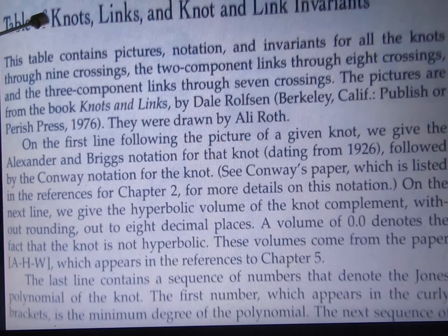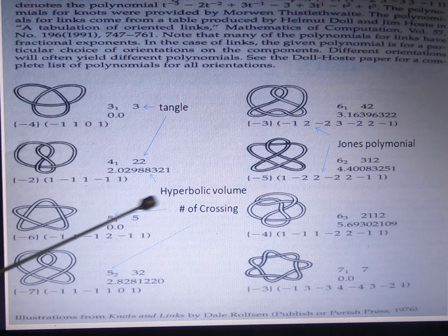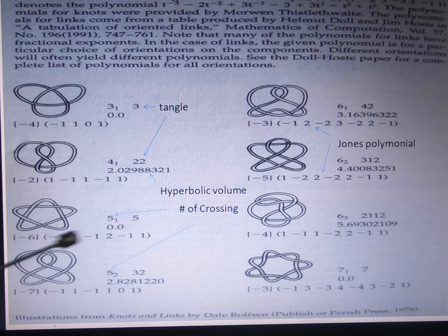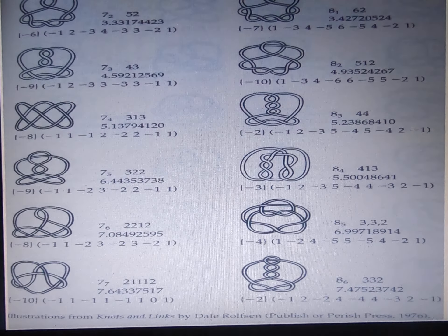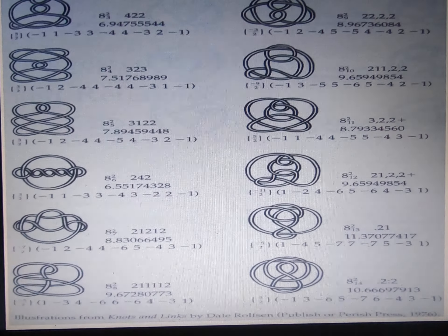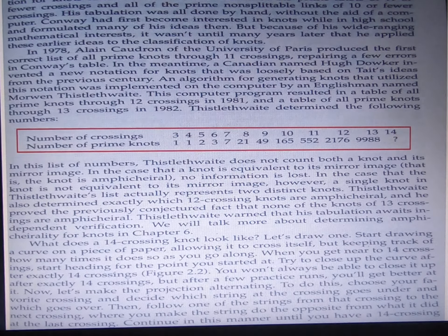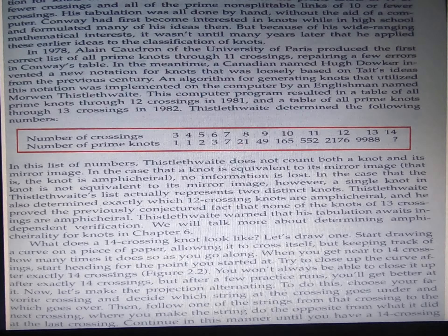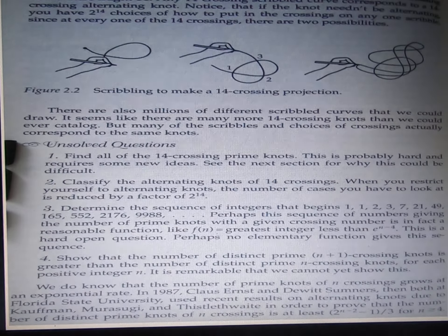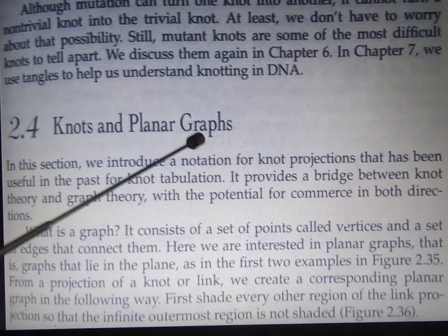Now we see how to tabulate the knots. These are the tangles, these are the closings, hyperbolic volume, Jones polynomial. These all show different kinds and numbers of crossings, and the number of prime knots. We show you more than 14 to 16 crossings, and some notation.